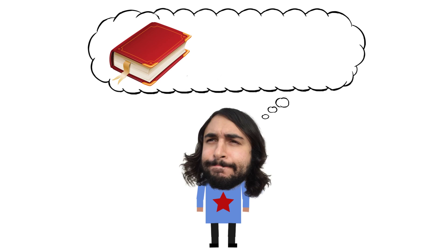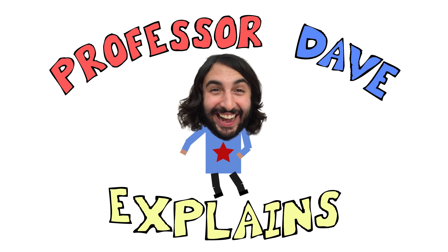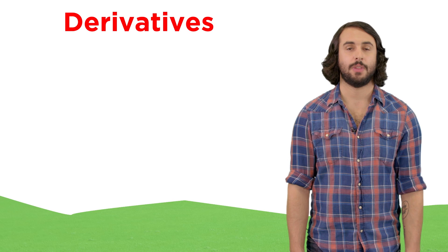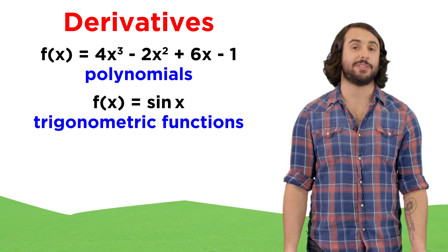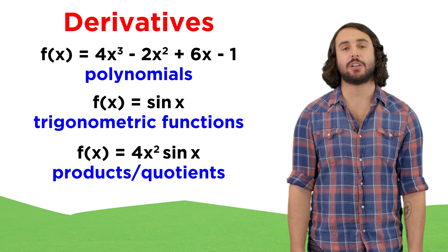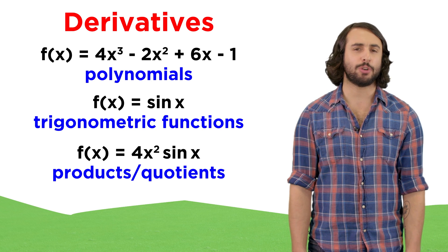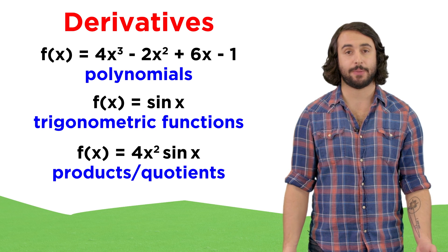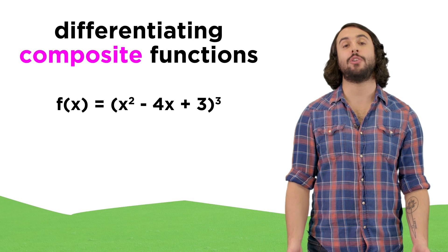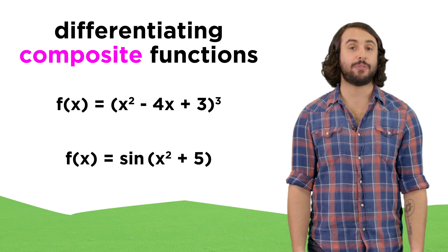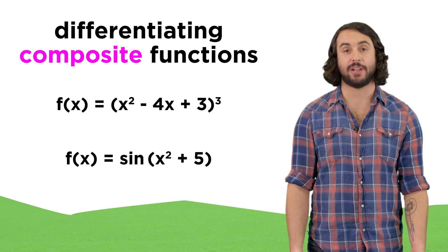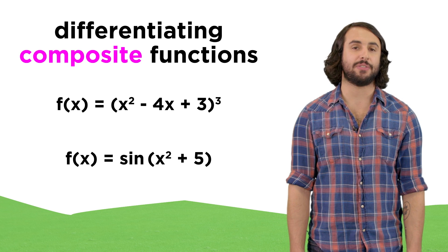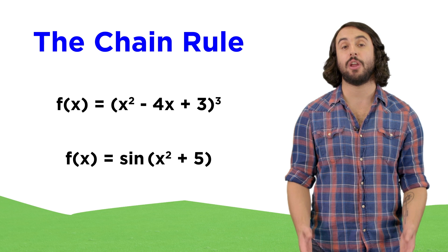Professor Dave here, let's learn the chain rule. We know how to take derivatives of polynomials in standard form, trigonometric functions, as well as simple products and quotients of these functions. But unfortunately, functions can get more complicated than this. What if we have a trinomial raised to an exponent, or a trig function operating on a polynomial? When we have multiple operations happening at once within a function, in order to take its derivative, we will have to use something called the chain rule.